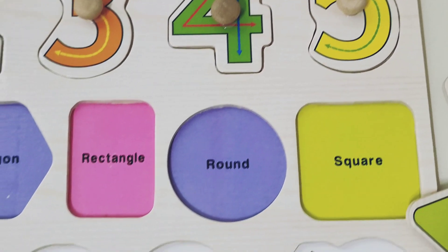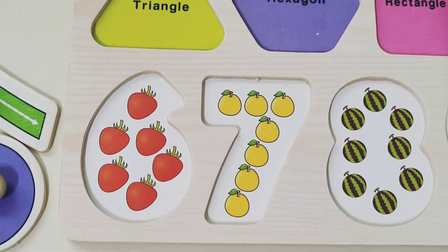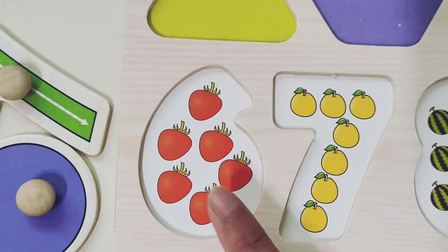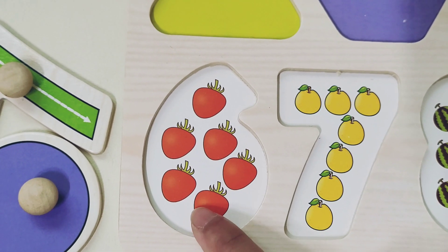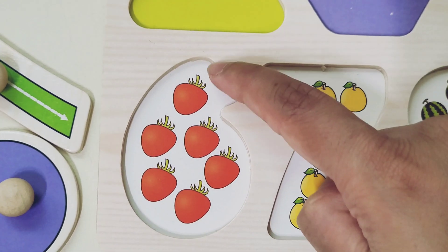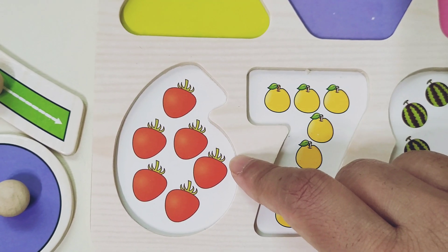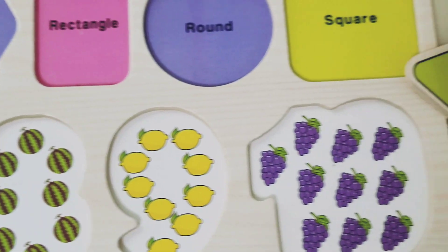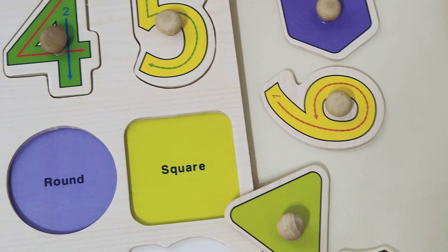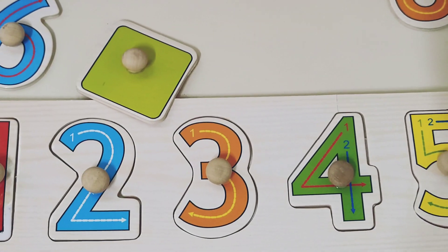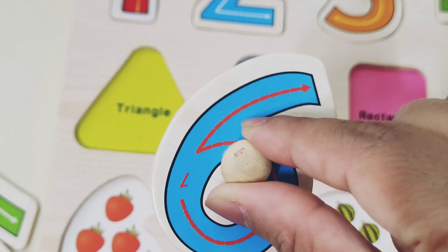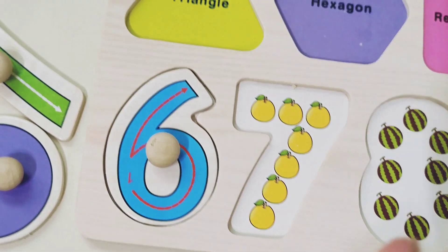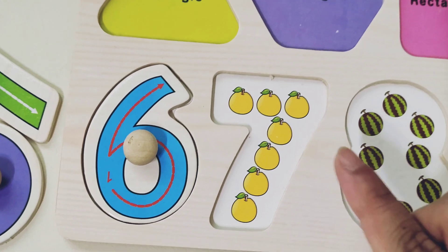Now, let's find the number 6. Oh wow! Here we have number 6. And inside the number 6, here we have 1, 2, 3, 4, 5, 6. Let's find the number 6. It's right there! Number 6. Let's put it here. Great job, kids!